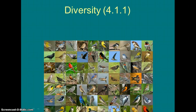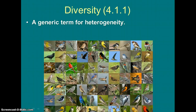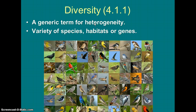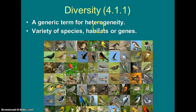Before we get started too deep, we need to make sure we are agreeing about what diversity is defined as. It's a generic term for heterogeneity, which means differences. There are a lot of different types of diversity that we're going to define on the next slide — one for species, one for habitats, and one for genes. But what we're really thinking about in this class is: when we look out into the environment, how many differences do we see, and why do we care about those differences? Why is it good?